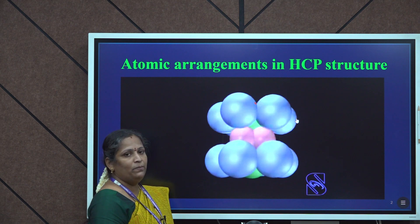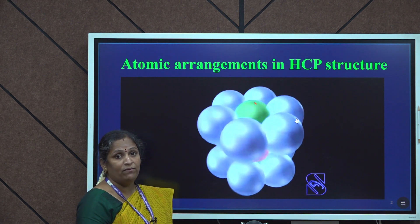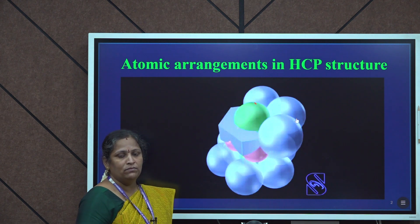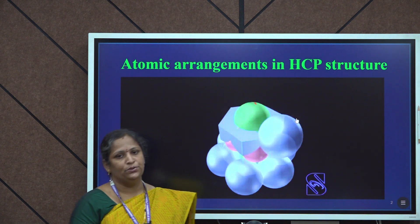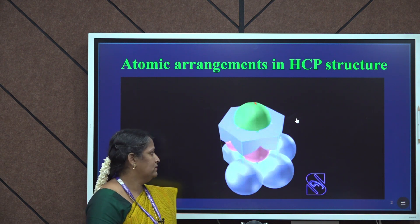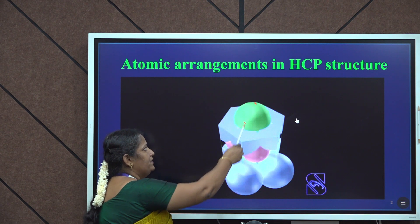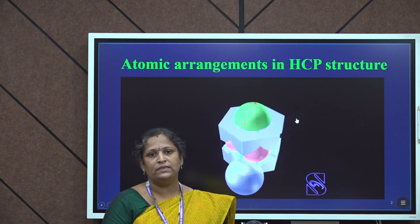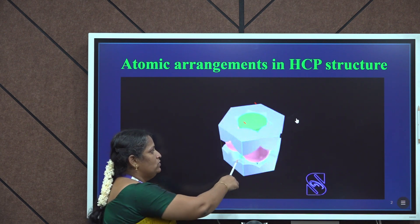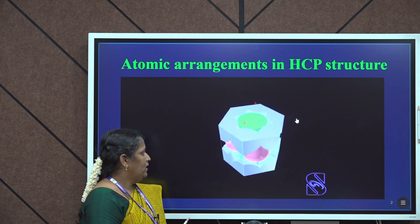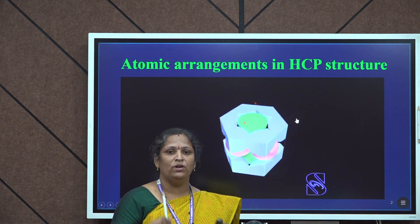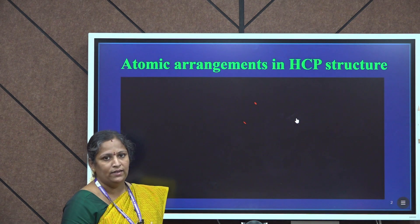We have two base centered atoms represented in green color, one in the top layer and the other in the bottom layer. Apart from that, we have pink color atoms that represent the middle layer atoms. Each corner atom is shared by six adjoining unit cells. Each base centered atom is shared by two adjoining unit cells, so only half of the atom contributes to this particular HCP unit cell. We have three internally positioned atoms represented by pink colored balls that solely belong to this unit cell and are not shared by any other unit cell.